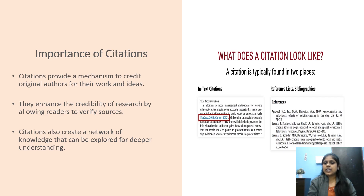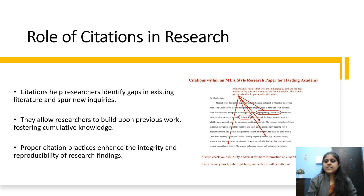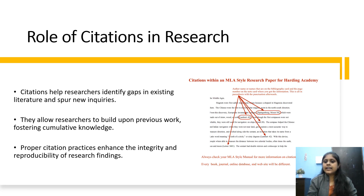Role of Citations in Research. Citations allow researchers to identify gaps in existing literature and formulate new inquiries. They allow researchers to build upon previous work, pursuing cumulative knowledge. Proper citation practices enhance the integrity and reproducibility of research findings. In a research paper, in-text citations represent the author name and the source information, with the page number in parentheses.